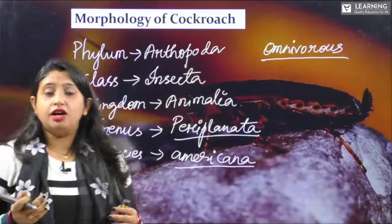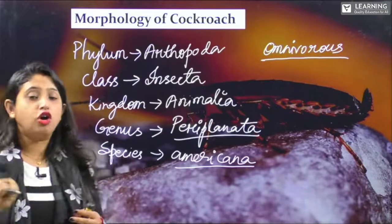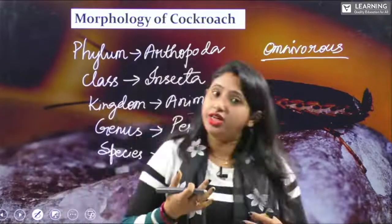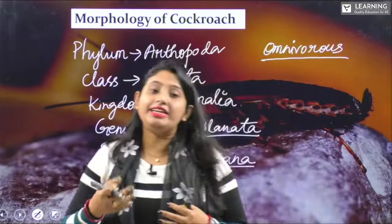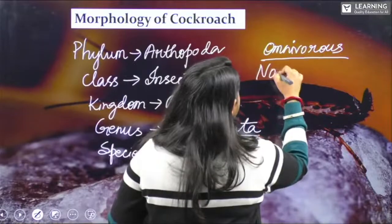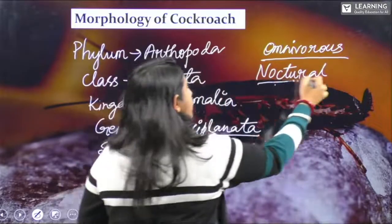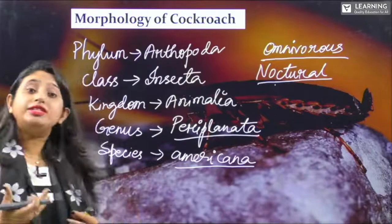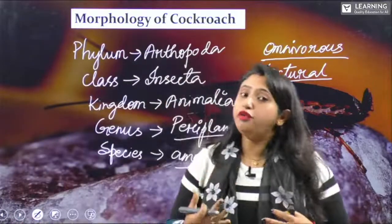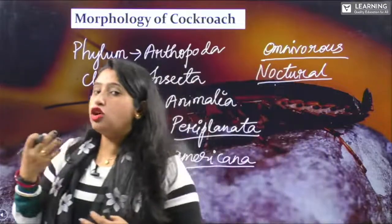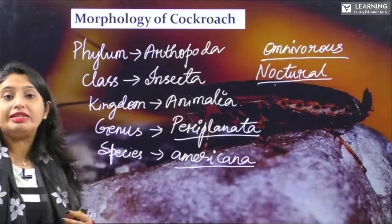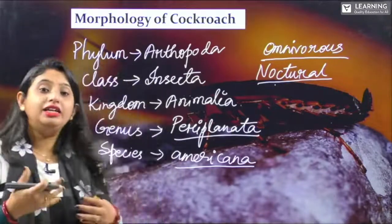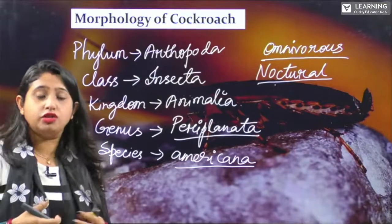You will see cockroaches at night time when you go to the kitchen — they don't come out during the day but especially come out at night. So they are nocturnal, meaning they can see during the night. They have compound eyes to sense things, antenna that provides signals, and sensory organs in the form of ganglion bodies, which help them sense their surroundings.